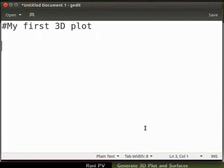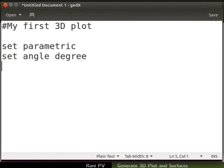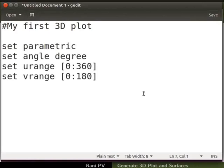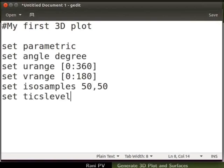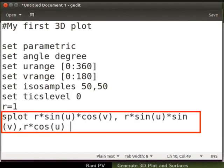The commands start with a hash. Next, please type the commands as shown here. First, set the plot to parametric mode. Then set the angle to degree. Next, specify the ranges of parameters u and v. Set isosamples to make a fine mesh. Set ticks level to 0. This sets the xy plane at 0 value of z axis. I will set the radius of the sphere to 1. Next, add the line splot and the function for the sphere as seen.